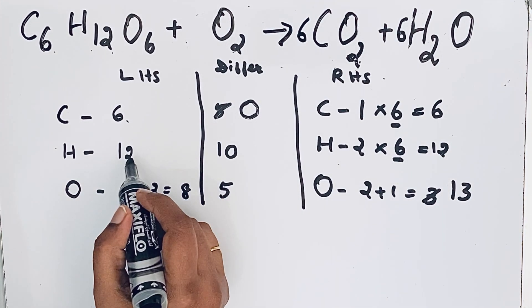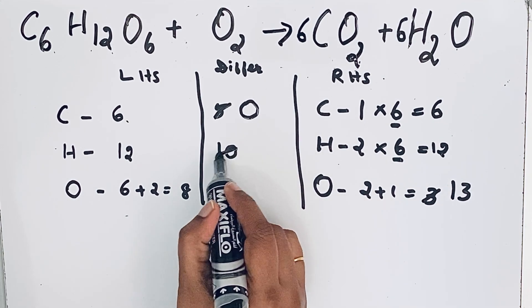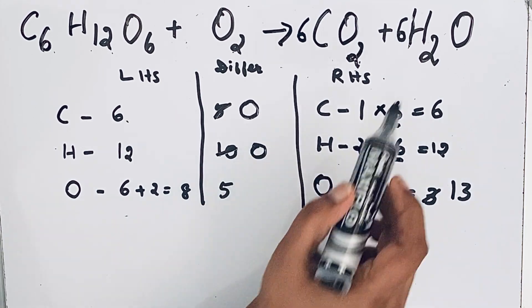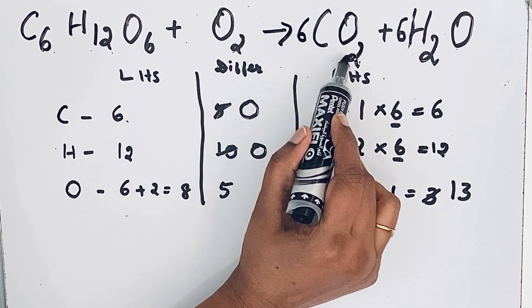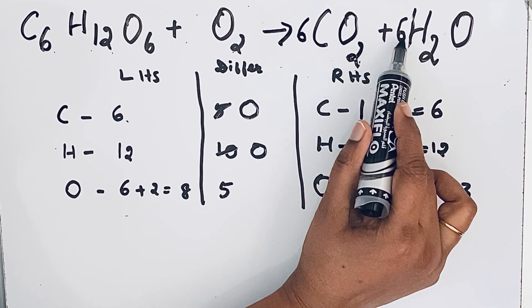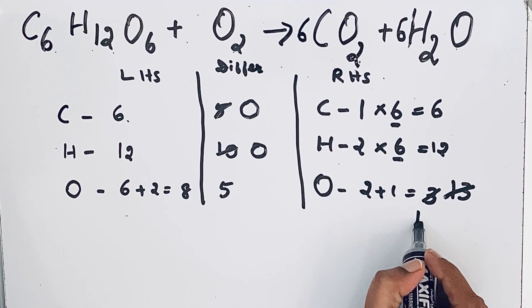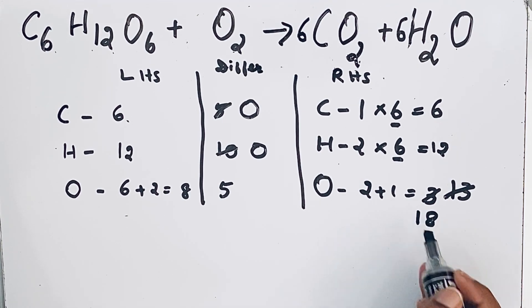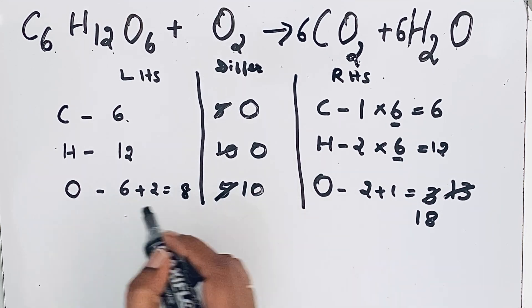What happened to the oxygen atom? The number of oxygen atoms is also changing. Already we have 6 times 2 is 12. Now one more 6 oxygen atoms, so 12 plus 6, 18. Cut 13 and immediately write 18. So 18 minus 8, the difference is not 5, it is 10 now.